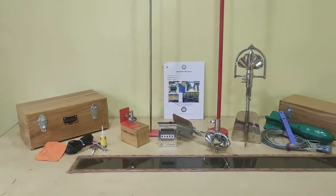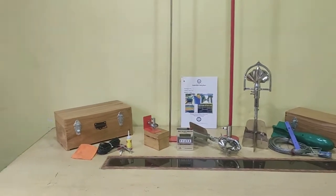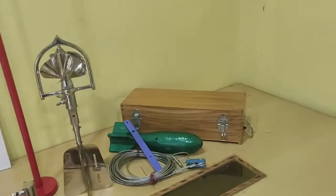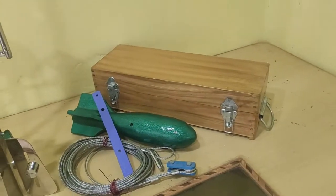All this arrangement will come with these two carrying wooden boxes. This is the cup type or propeller type wooden carrying box, and this is the fish weight water current meter wooden box.